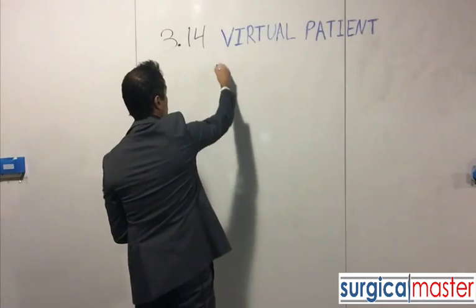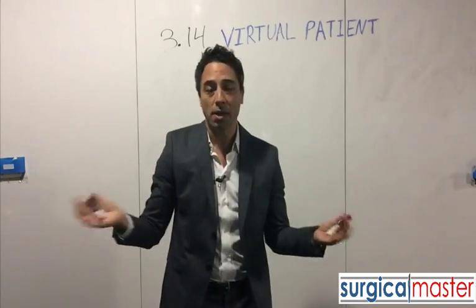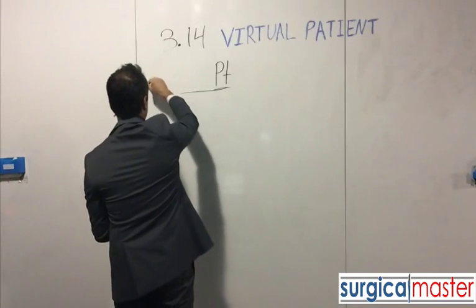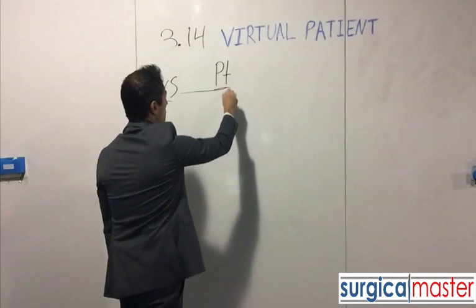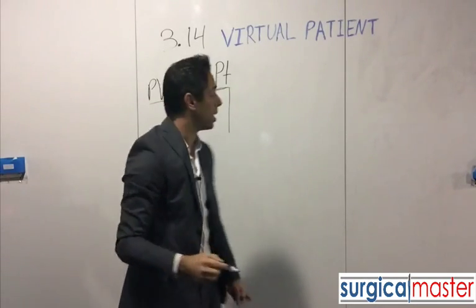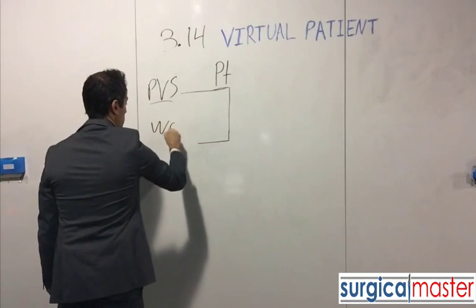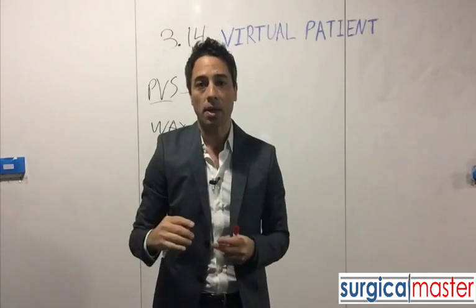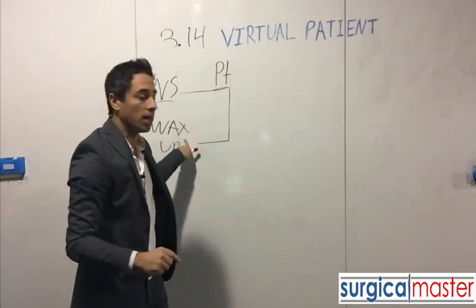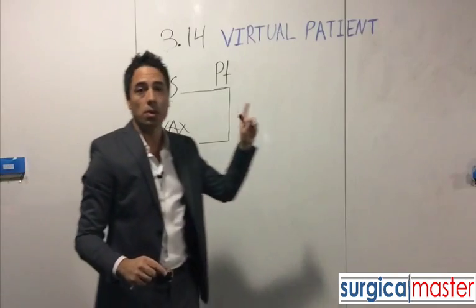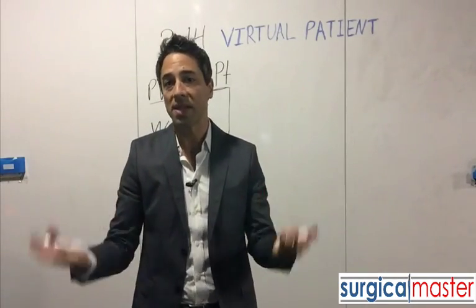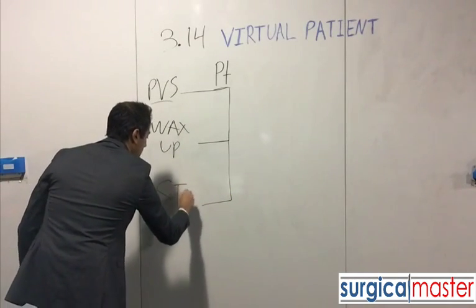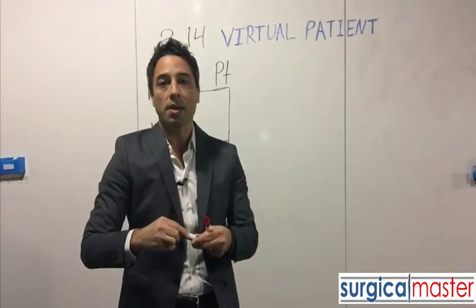The first thing we need is a patient that is missing one or more teeth. What we'll do then is take an impression — ideally the most accurate impression would be with PVS, and ideally have some type of blueprint in the form of a wax-up. So we have an impression of the site that is edentulous or partially edentulous, plus a blueprint in the form of a wax-up. We can take these two physical models and scan them optically, or have a company scan them, which will create an STL file.